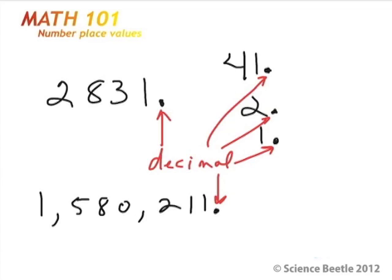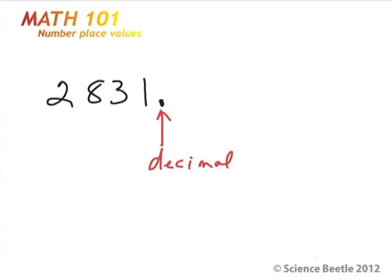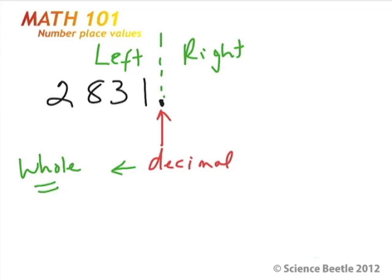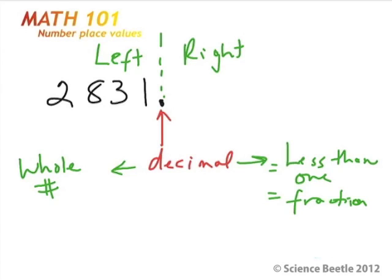And why is the decimal always there? Because the decimal kind of gives you place value. Essentially it says that everything to the left, so here, and we're going to say to the left is over here. And everything over here is going to be to the right. And so everything to the left is going to be a whole number. And if you go to the right of a decimal, this is going to be less than 1, and essentially this is going to be a fraction.